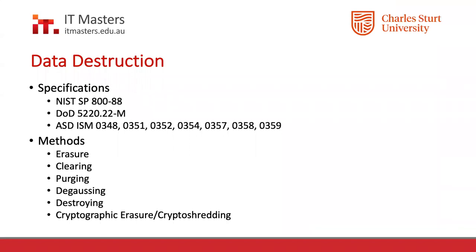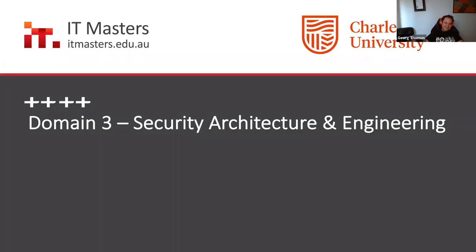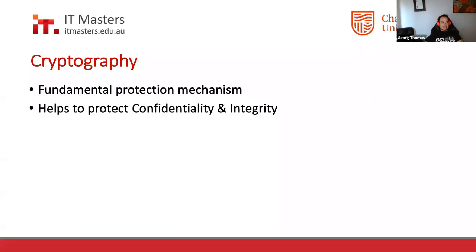Moving to Domain 3: Security Architecture and Engineering. That CASB discussion was actually a good segue. A key element here is cryptography — when I went through the CISSP, cryptography was a pretty big chunk, and it still is today. It's fundamental to information security and cybersecurity. The text states it's a fundamental protection mechanism — it helps protect confidentiality and integrity, though availability perhaps less so.